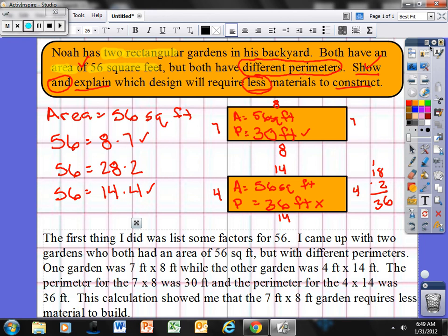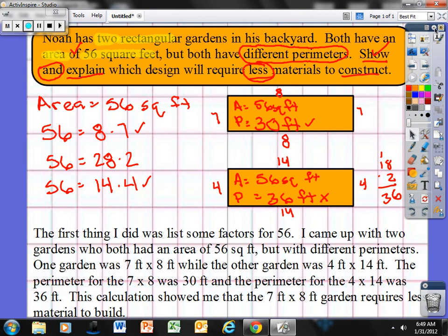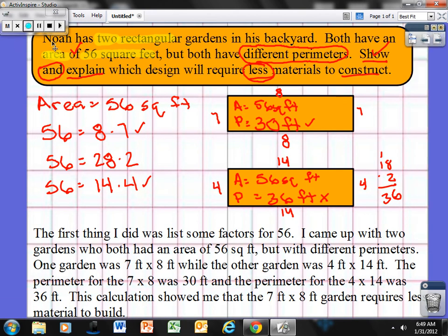Let me double check here my work, make sure I have everything answered - something we need to start getting in the habit of. Noah has two rectangular gardens in his backyard, both have an area of 56 square feet, but both have different perimeters. Show and explain which design require less materials to construct. OK, let's go take a look. I listed some factors of 56: 56 equals 8 times 7, 56 equals 28 times 2, 56 equals 14 times 4. I chose 8 times 7 and 14 times 4. Both give me an area of 56, which is what's required in the problem. Now we just have to figure out if they give me different perimeters.